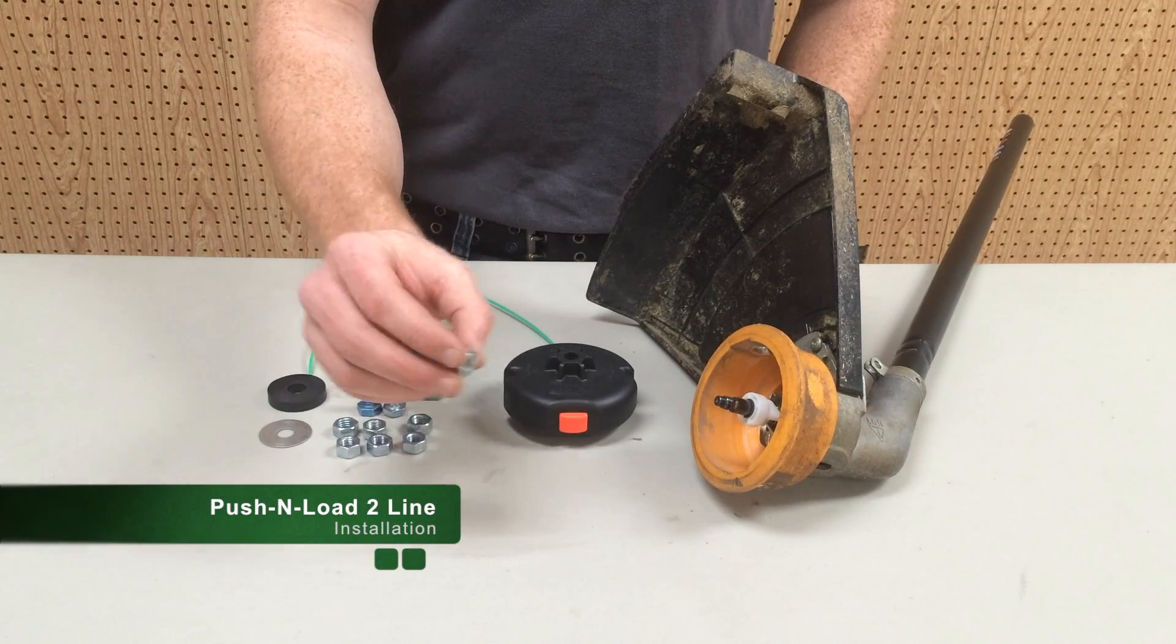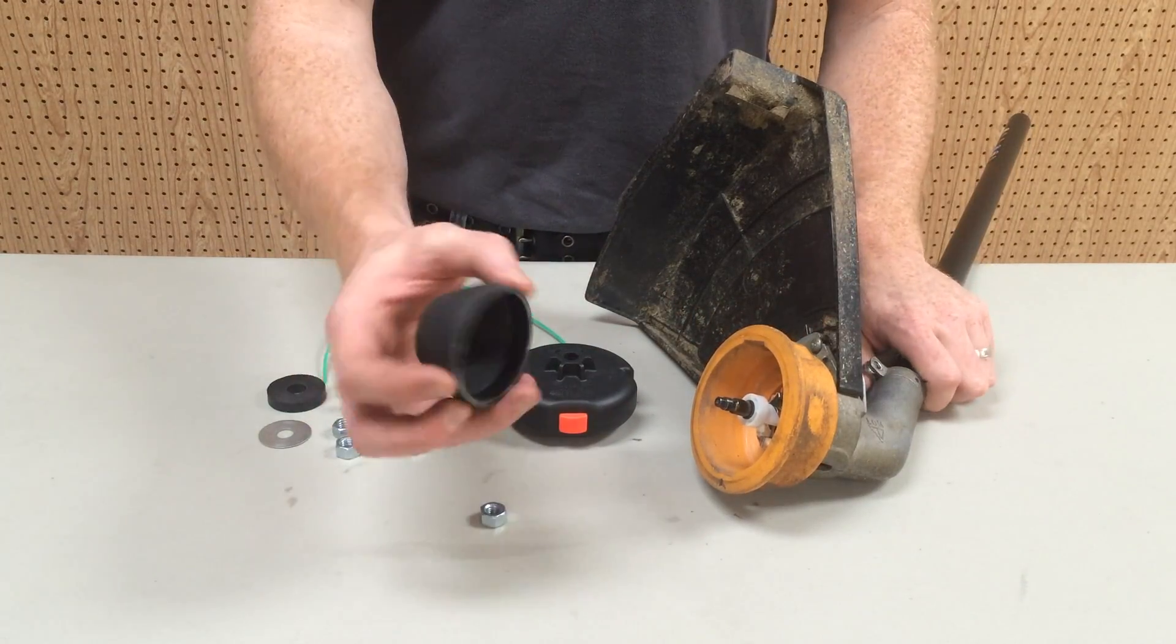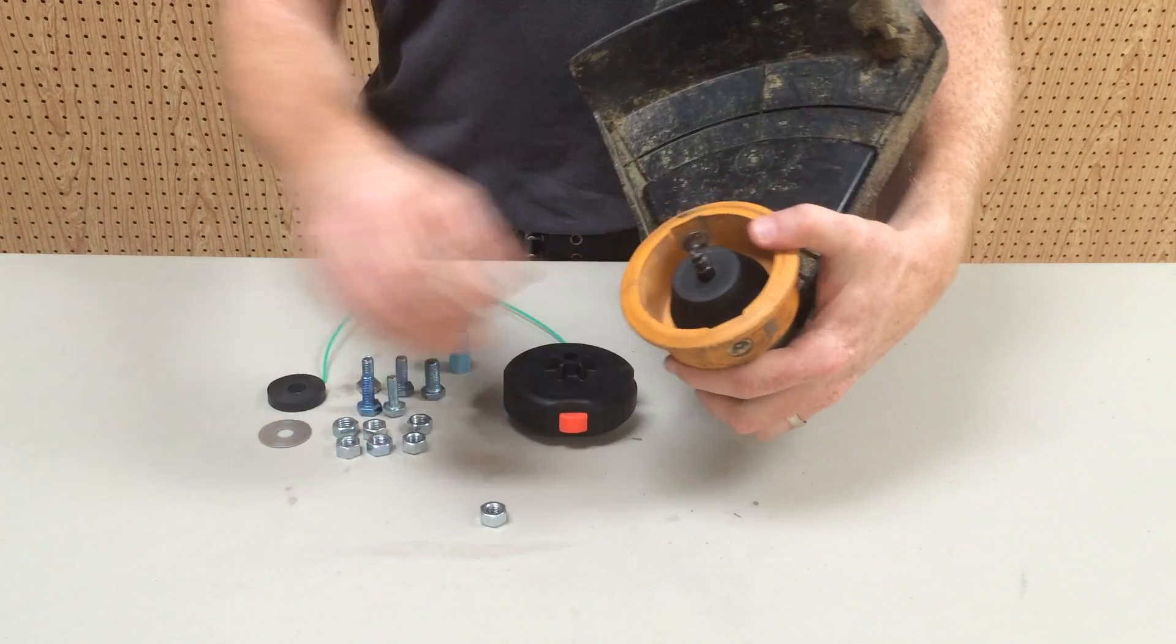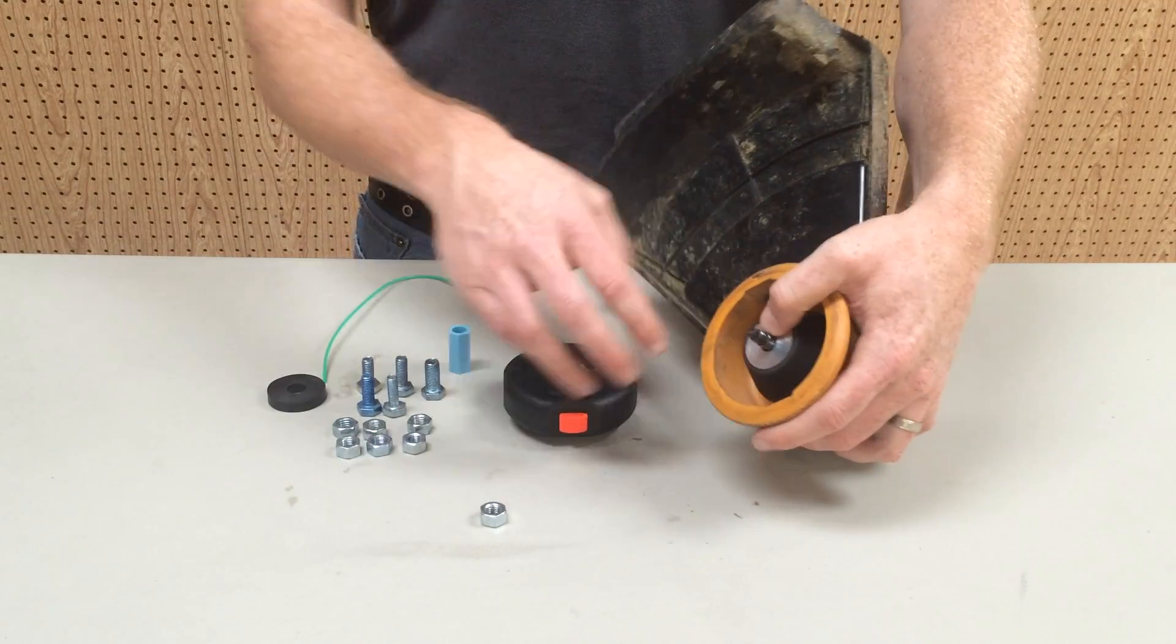Identify which nut threads easily onto the shaft. Place the adapter cup inside the existing housing. Place the metal washer onto the adapter cup.